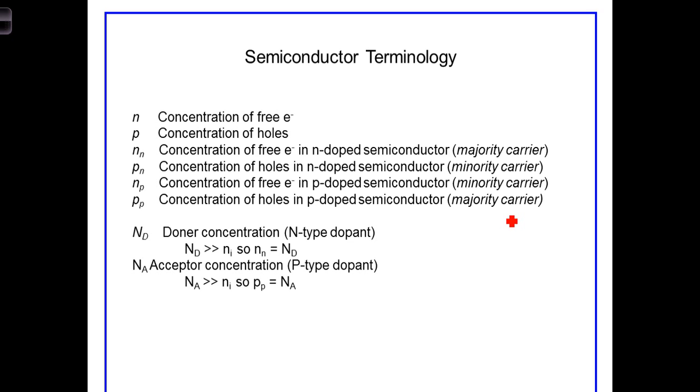Holes are the minority carrier in an N-type doped semiconductor, and electrons are the majority carrier in an N-type semiconductor. And in P-type semiconductors, the holes are the majority carrier, and the electrons are the minority charge carriers.